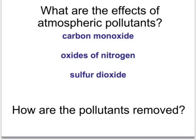Sulphur dioxide isn't particularly produced by cars because the petrol in cars doesn't contain a great deal of sulphur, but where coal is burned, for example in power stations, sulphur dioxide can be formed. Again, this is an acidic gas and dissolves in rainwater to form acid rain.